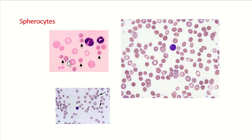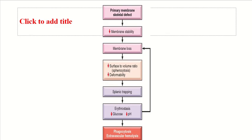These are the spherocytes — you can see these cells on the blood smear. The primary defect in the skeleton membrane causes decreased membrane stability, loss of a portion of membrane, decreased surface-to-volume ratio, and decreased deformability. When RBCs become less deformable while passing through the spleen, there will be sequestration, leading to extravascular hemolysis.